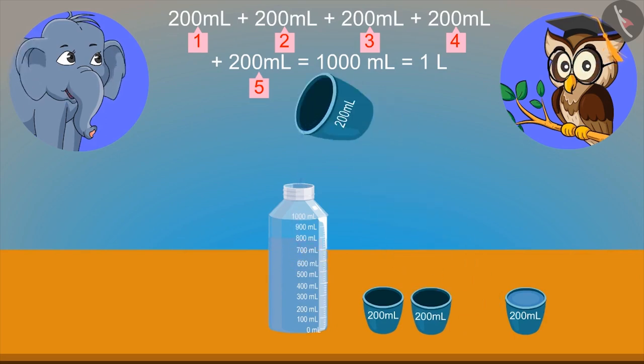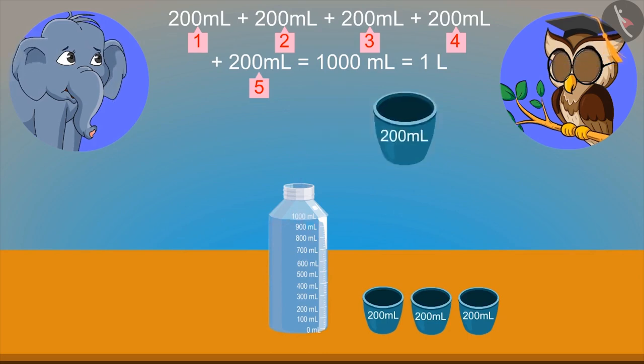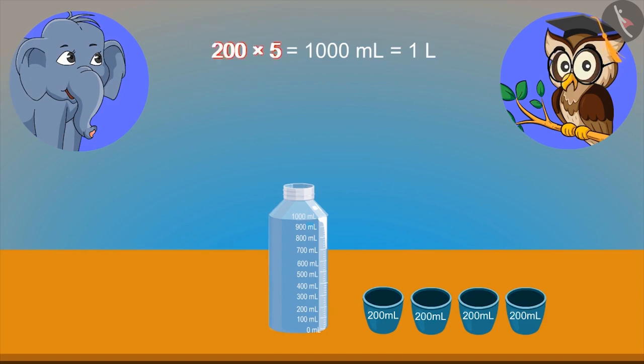So, if in this bottle, we pour 200 ml of water for 4 times, then it will become 1 liter. Very good, elephant. 5 times will make 1 liter.